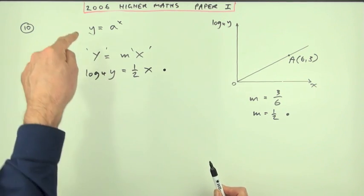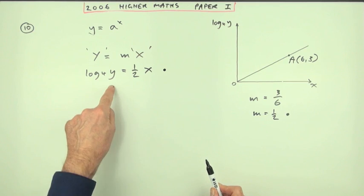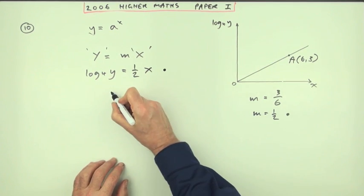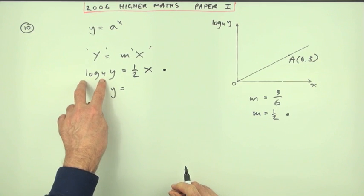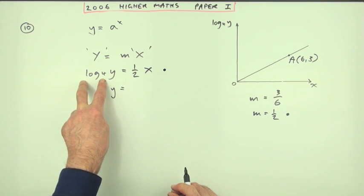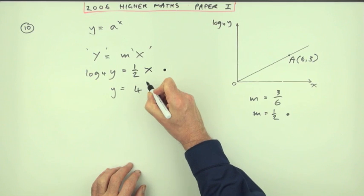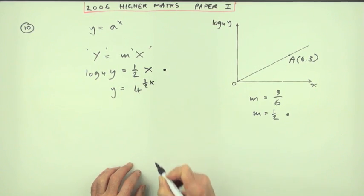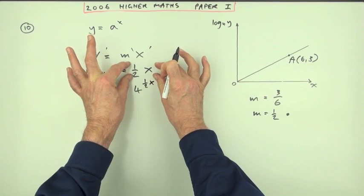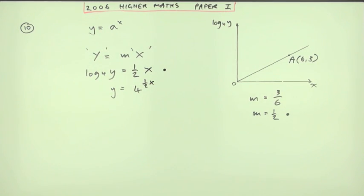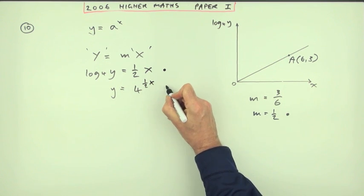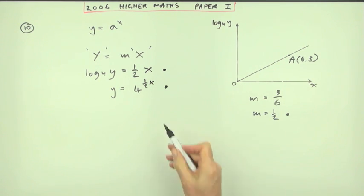The next step would be to rearrange that back into the original form. In other words, make it read y equals. In that case, y is going to be - removing the operation log base 4, the other side will be the inverse of that, which is 4 to the power. It'll be 4 to the power a half x. That will now lift up as the power - the log is the power. That gives you the third mark.